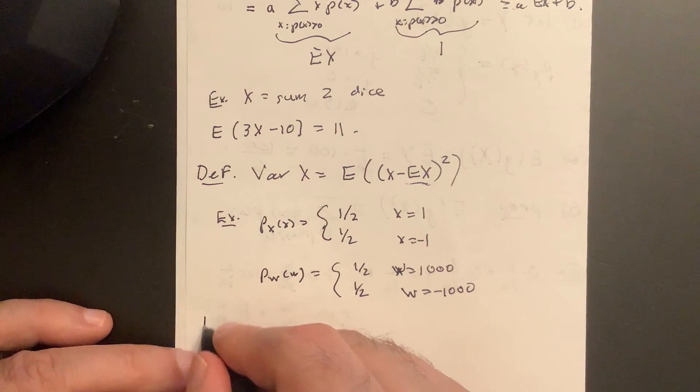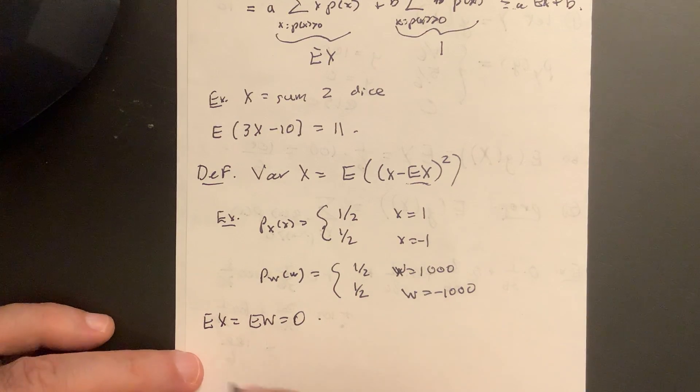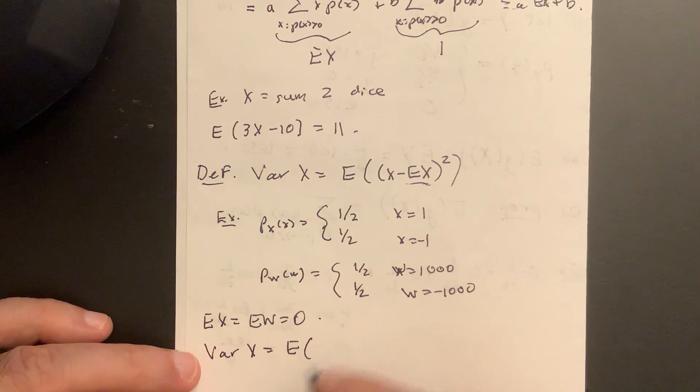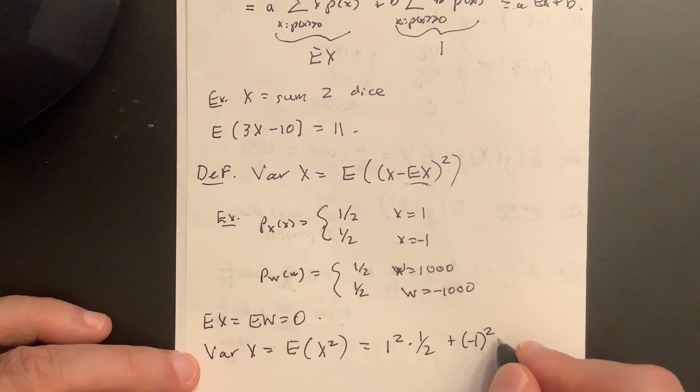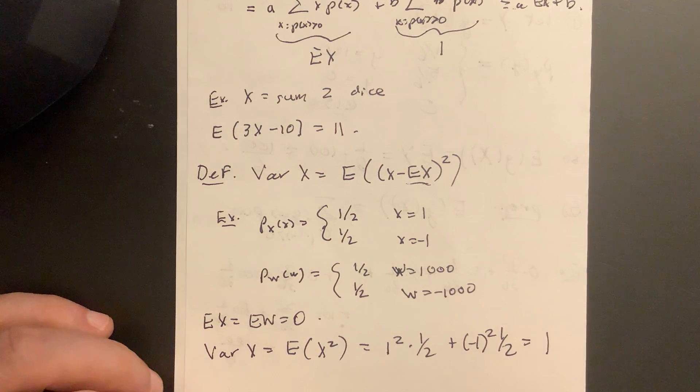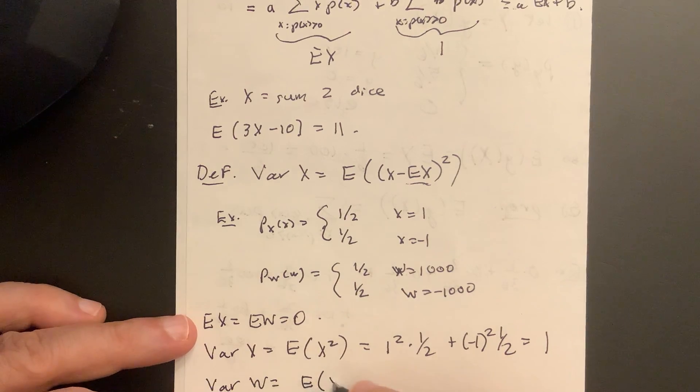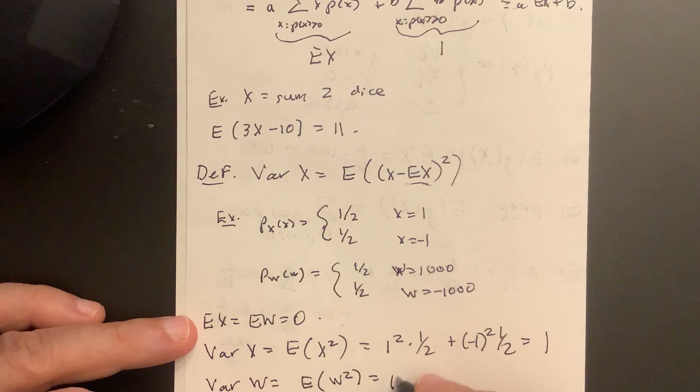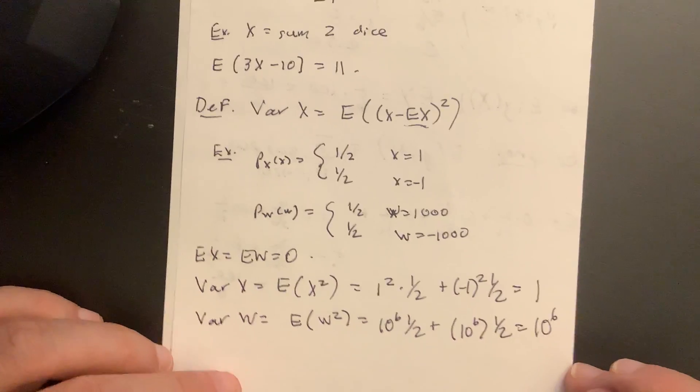Well, both E(x) equals E(w) equals zero, as you can see, but the variances will be very different, right? So the variance of x is actually equal to E((x - E(x))^2), but E(x) is zero, so it's E(x^2) in this case. And E(x^2) is equal to 1^2 times a half plus (-1)^2 times a half, which is equal to one. Yep. Variance of w. In this case, also E(w) is zero, so I get E(w^2). And that's a million. It's another million. Right? After I square them, they both become a million, and I get a million.